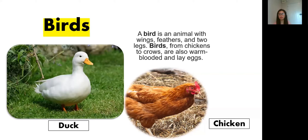So I have here the first example of vertebrates: birds. Again, birds — please repeat after me, say the word: birds. Okay, so what is a bird? A bird is an animal with wings.